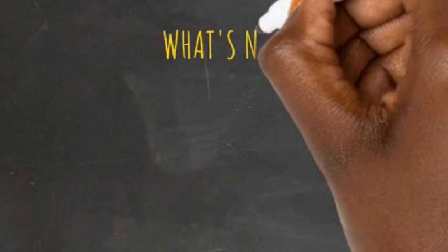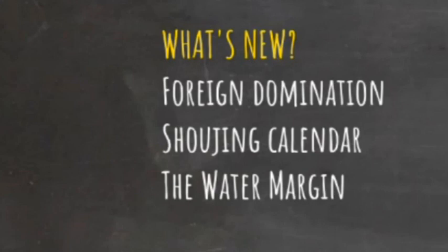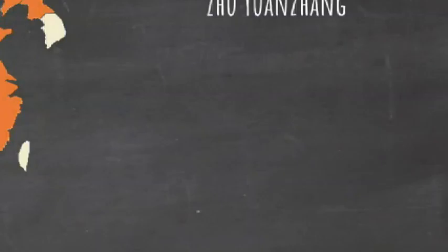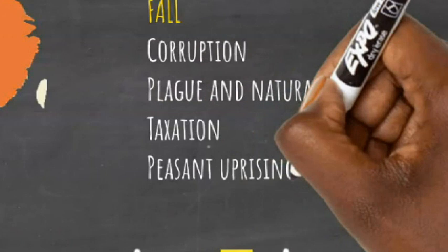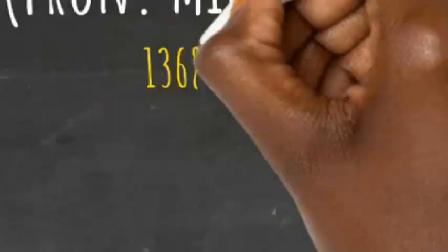It was also a time of innovation, as Guo Shoujing recalculated the calendar to produce a new calendar that was only 26 seconds off the modern Gregorian calendar. During this period, the epic story of the Water Margin was written. Key people of the Yuan include Genghis Khan for his foundational conquests, Kublai Khan, and Marco Polo, who visited the court of Kublai Khan. In the late years of the Yuan dynasty, political corruption and taxation caused a succession of peasant uprisings, while natural disasters and plagues caused the people to believe that the Yuan had lost the Mandate of Heaven. In 1368, the leader of the Red Turban Rebellion, Zhu Yuanzhang, conquered the Yuan's capital Dadu, and the Yuan dynasty collapsed with the last Yuan territory falling in 1381.